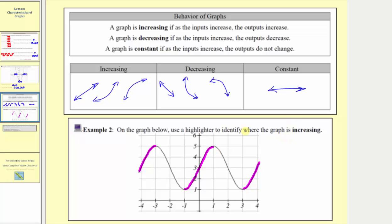So we are done with this question, but I want to point out a couple more things. Notice how when the graph changed from increasing to decreasing, we had a high point — which we call a local maximum, sometimes referred to as a relative maximum. A low point is a local minimum, or relative minimum. Where the graph changes from increasing to decreasing, we have a local maximum occurring at the input value of negative three, with a local maximum value of five. Where it changes from decreasing to increasing, we have a local minimum at the input value of negative one, with a local minimum value of positive one.